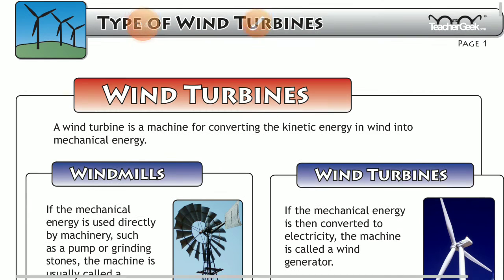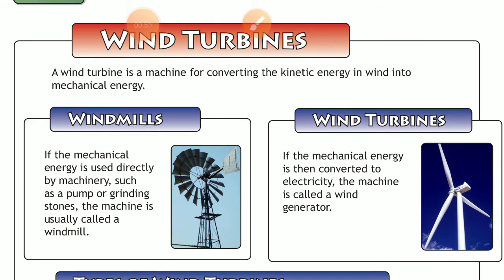Wind turbines can be used as windmills or wind turbines. Windmills can be used directly for some work like pumping and grinding stones — these use the mechanical energy of wind directly. If you are using wind turbines to generate electricity, with the help of a generator you can convert the mechanical energy of wind into electrical energy.